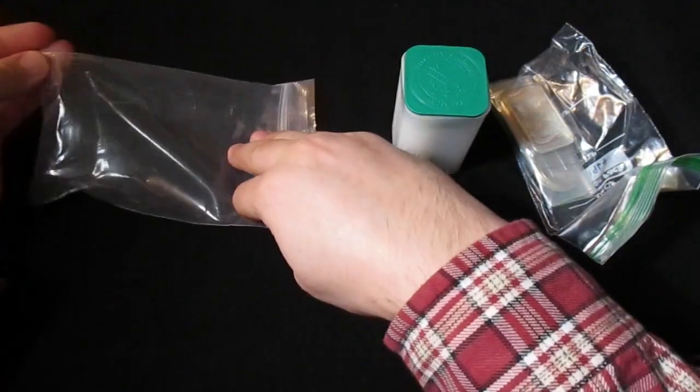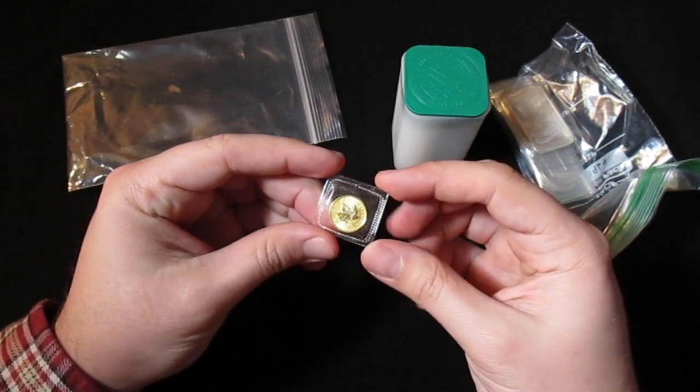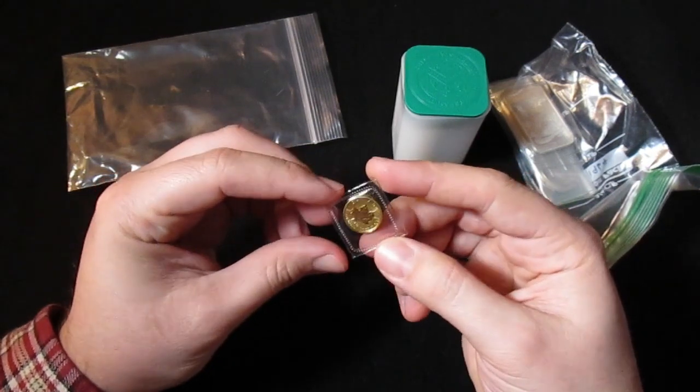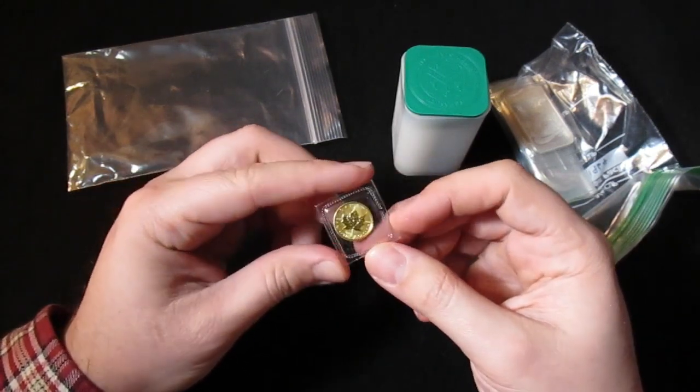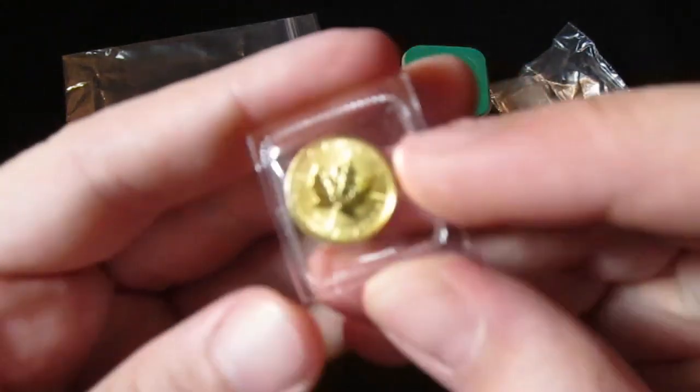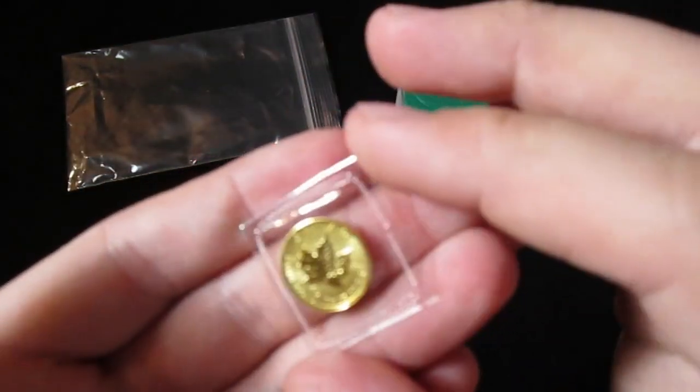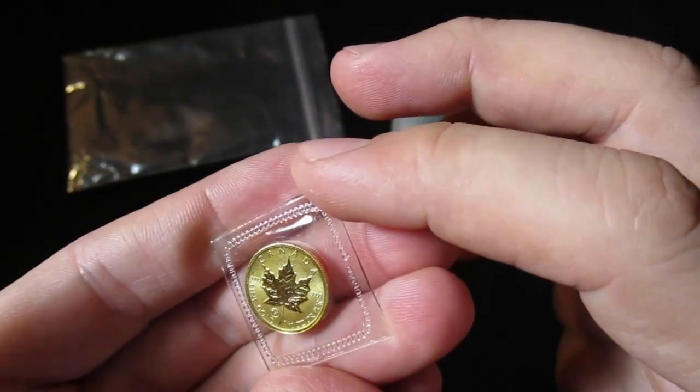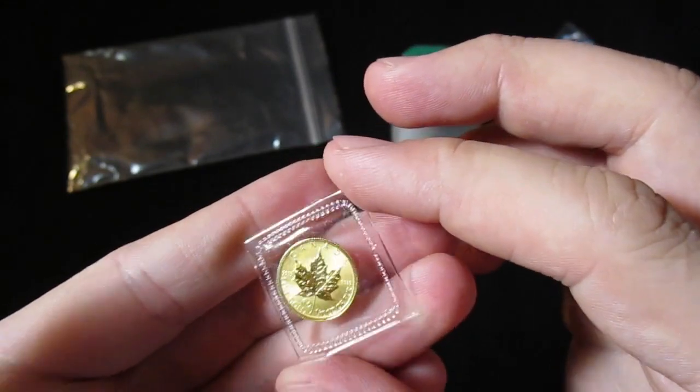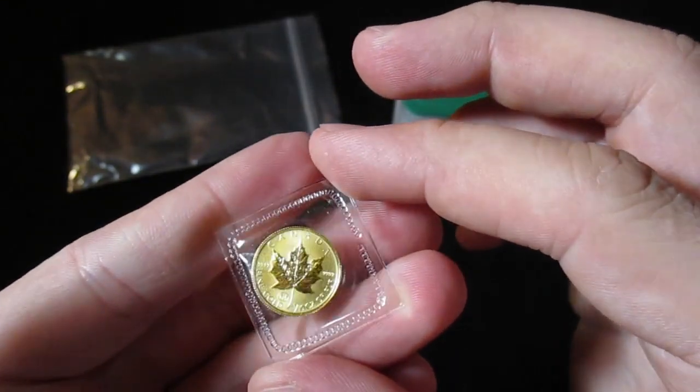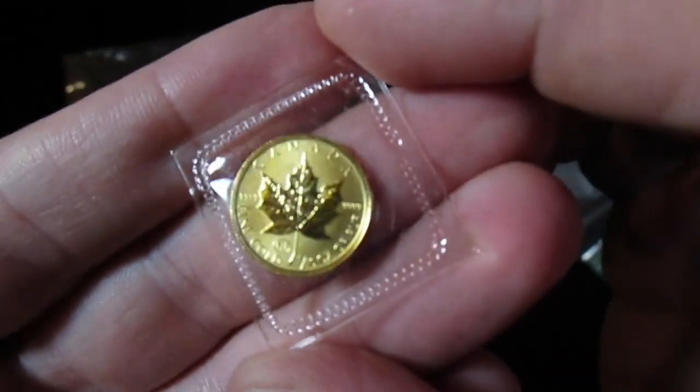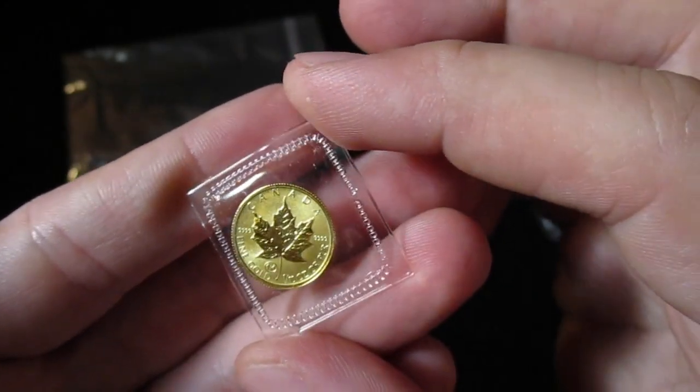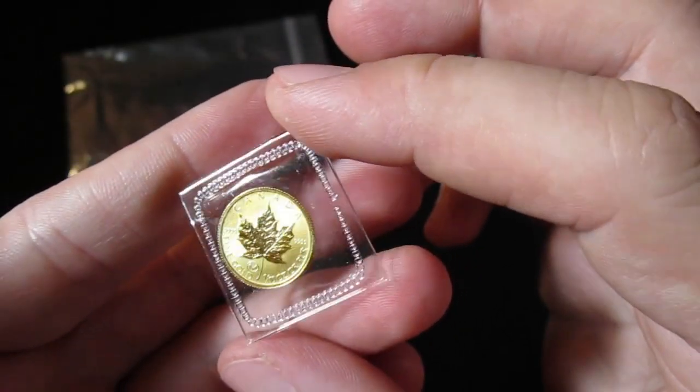So I believe I won an auction for a one-tenth ounce gold, and I thought it was going to be a Philharmonic, but it looks like they sent me a maple leaf, and that's fine with me. I know these guys have a little bit of trouble keeping track of their stuff sometimes. But this is indeed my first ever gold maple of any kind. And it is very, very beautiful. Many of you already know about that, and I can see why you guys are such big fans of the gold maples.